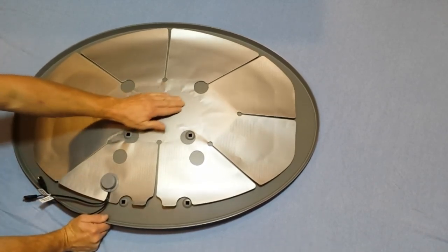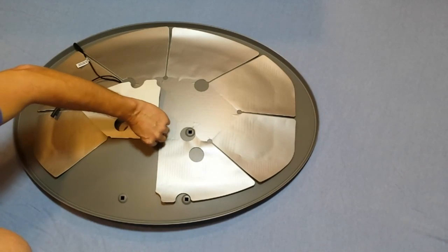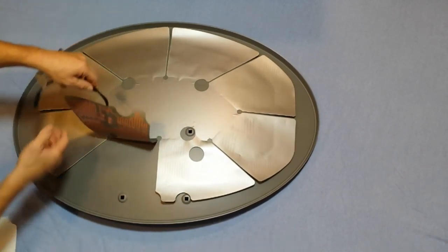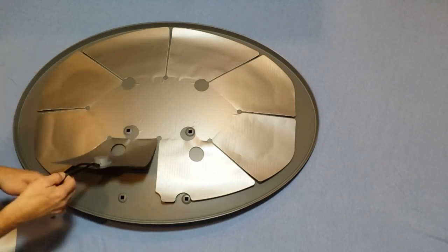Work out any wrinkles very slowly with your hands. Now take the paper backing off one of the outer parts of the dish heater and apply it also. If you get yourself into a little bit of trouble smoothing it out, don't worry.